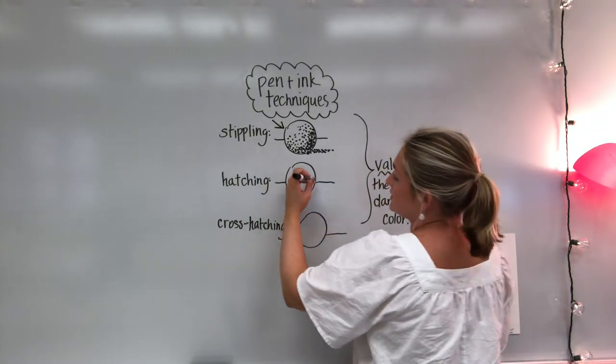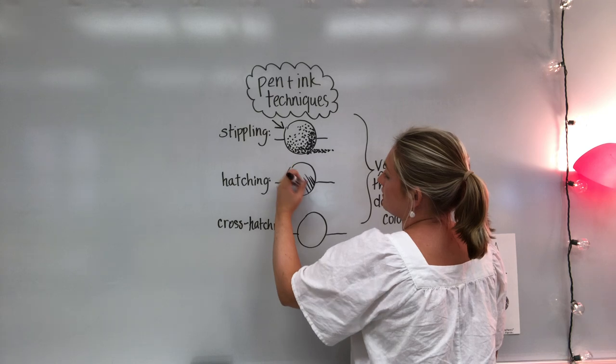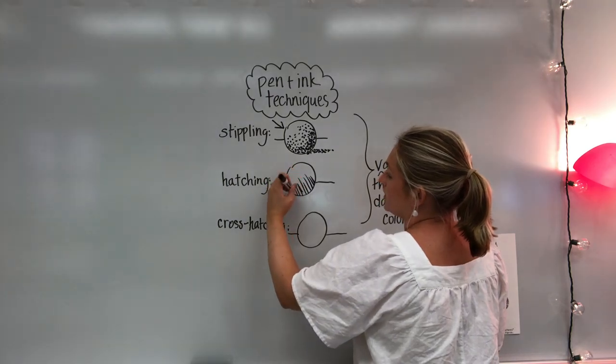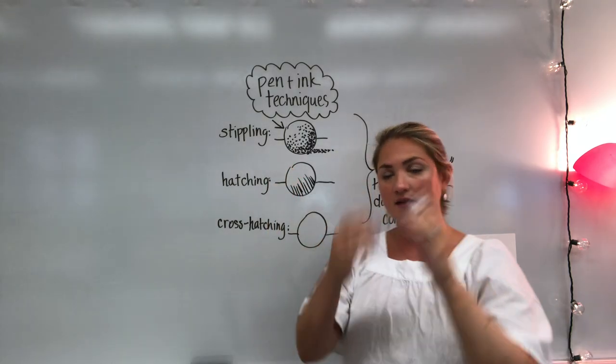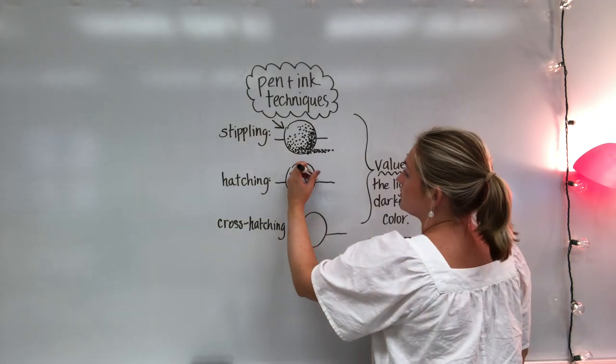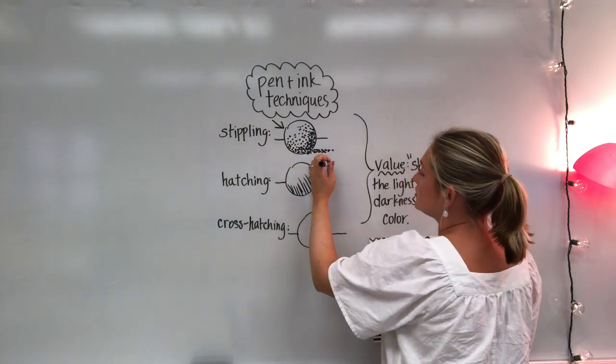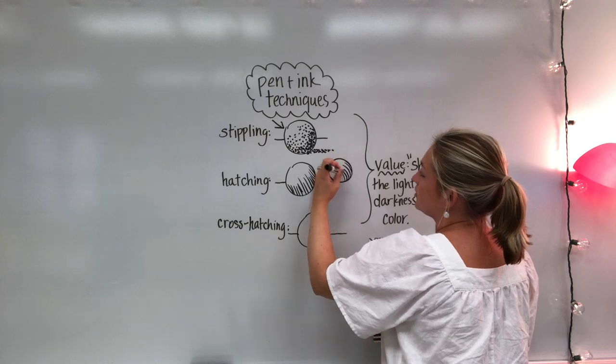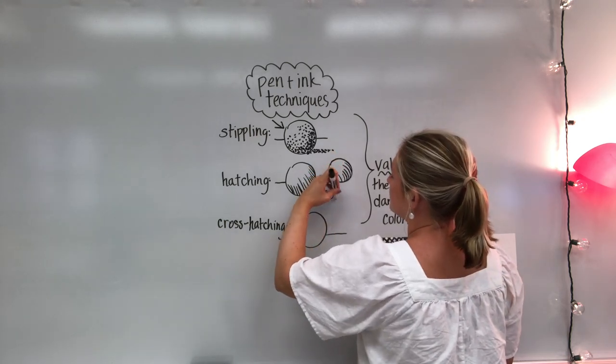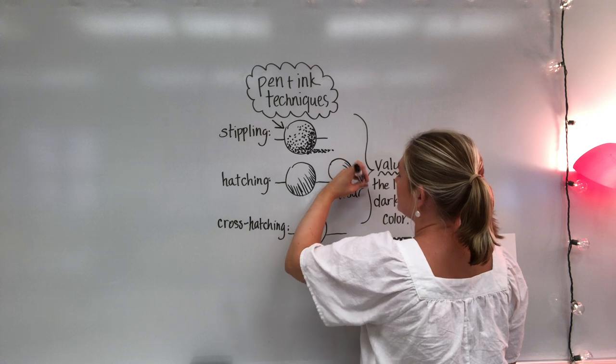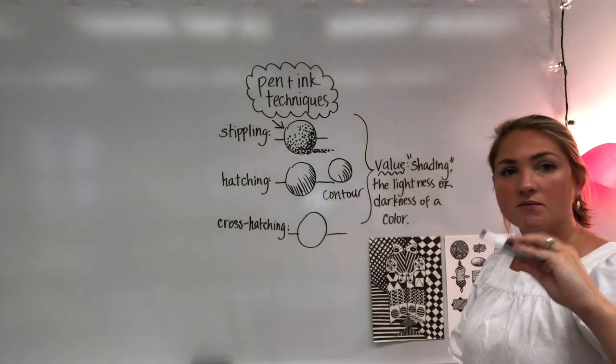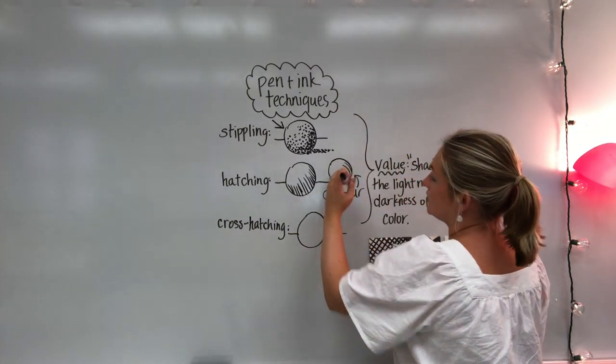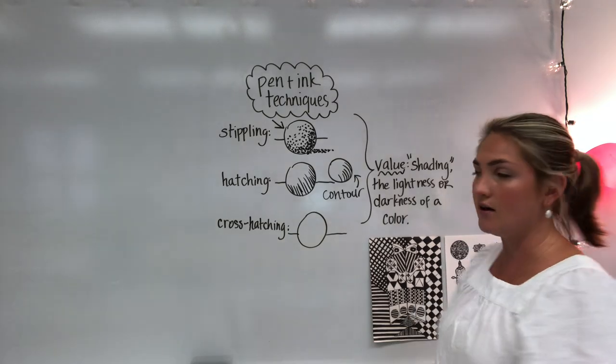The next technique is hatching and hatching just means lines that are parallel to one another, which means they are side-by-side they don't meet, parallel to one another. I'll show you another technique too. The lines can curve a little bit that gives it a little bit of contour, c-o-n-t-o-u-r. Contour lines are basically just meaning it's following the edge or the shape of the form.